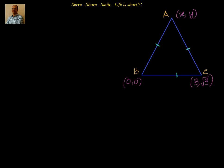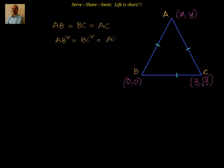Now, what's the approach we will follow here? We know the property of an equilateral triangle — all sides are equal. So can I say AB = BC = AC? That means the squares of them should also be equal: AB² = BC² = AC².